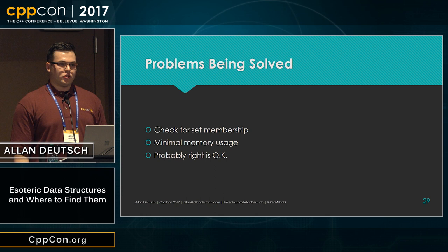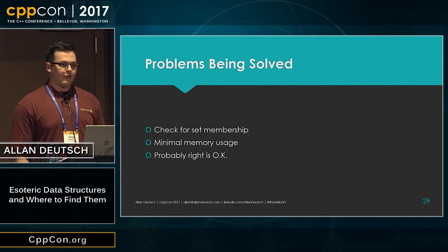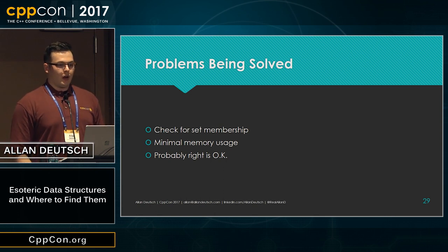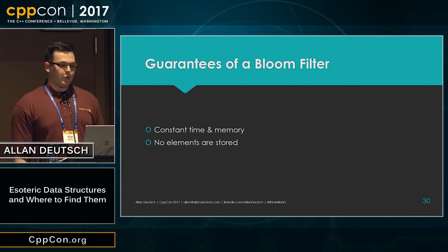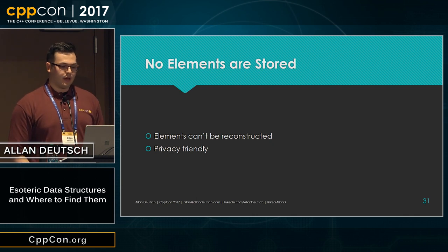The problem being solved is typically when you want to check a set for the membership of an element. Bloom filters are very efficient with memory — they use far less than any sort of set representation that actually stores the elements, like several orders of magnitude better. The trade-off is that you have to be okay with it probably being right and not always being able to guarantee correctness. An interesting property is that the elements aren't stored, which means they can't be reconstructed, and it's privacy friendly — so if you want to keep track of user data without actually having the user data, this is a cool way to do it.